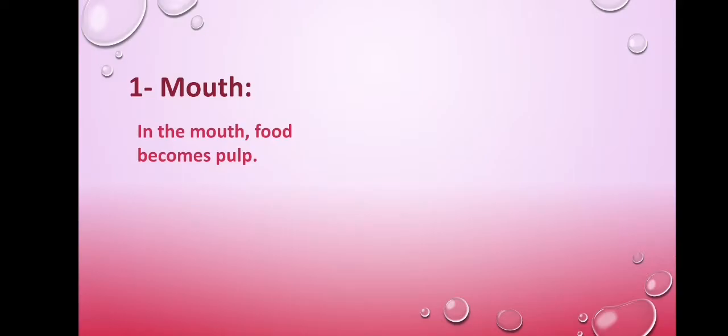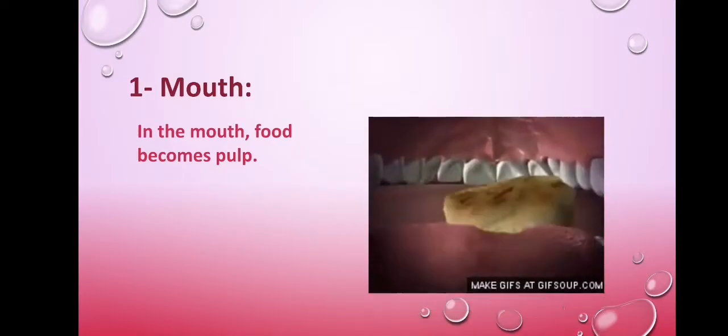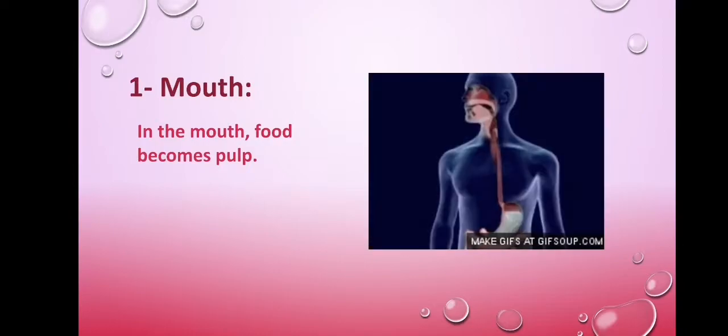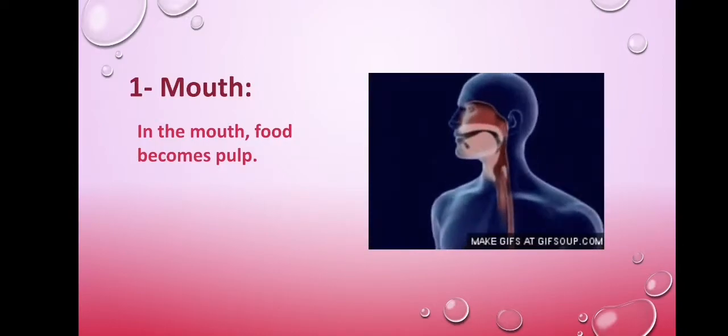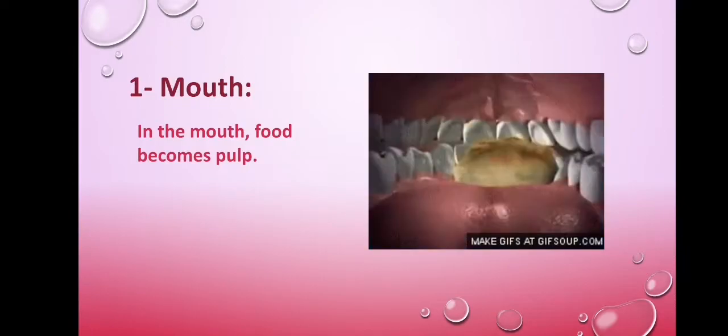The first part is the mouth. When you eat, the teeth crush the food. The salivary glands in the mouth secrete saliva that makes the food easy to swallow. Now the food is transformed into pulp.